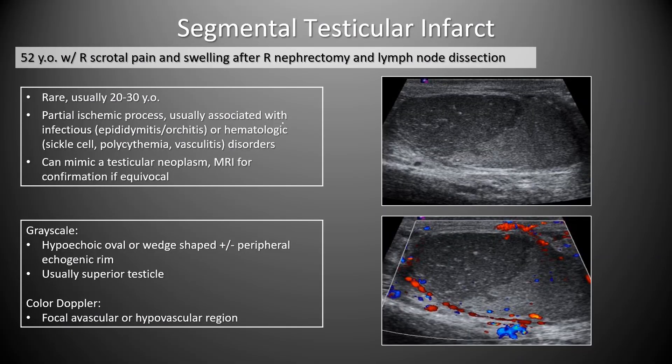A 52-year-old with right scrotal pain after right nephrectomy and lymph node dissection showed an elliptical to wedge-shaped area of decreased echogenicity within the upper pole of the testis without color Doppler flow — segmental testicular infarction. This is a rare disorder usually occurring in patients 20 to 30 years of age, representing partial ischemia associated with infectious etiologies or hematologic disorders such as sickle cell or vasculitis. It can mimic a testicular neoplasm; MRI can be useful for confirmation.